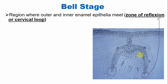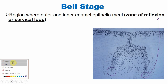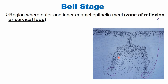One thing to mention: in the bell stage, the enamel organ assumes its final shape, so you can identify whether a tooth germ is of an anterior or posterior tooth. For example, you can see the future cusp tips. This epithelium defines the shape of the tooth — this is the posterior one. In case of an anterior tooth germ, there will be an incisor ridge or cingulum.